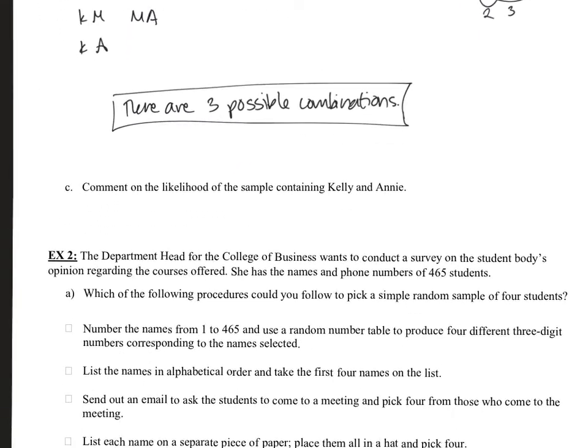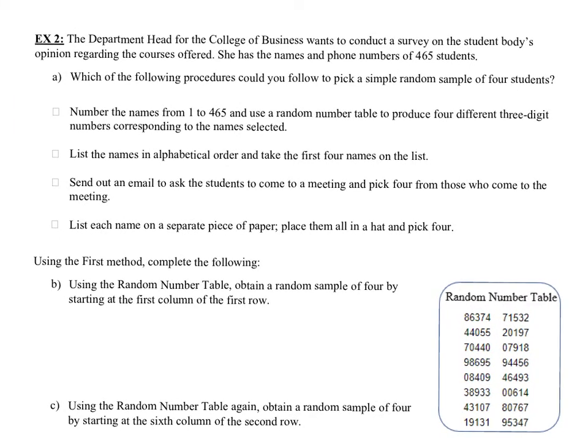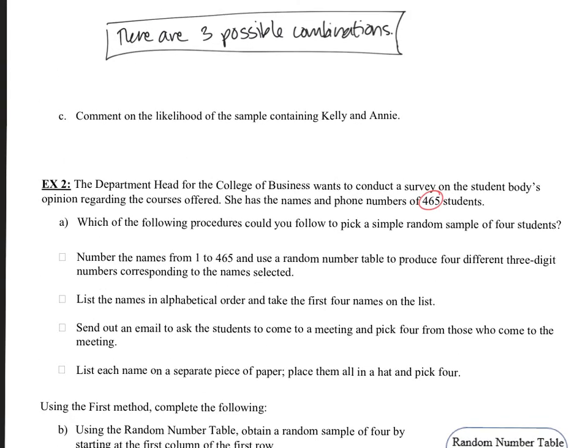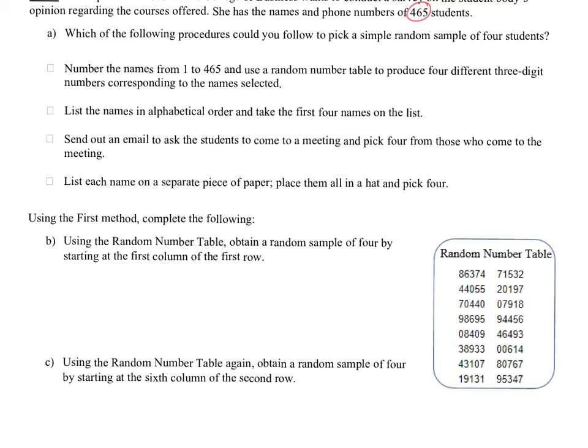So on to example two. The department head for the College of Business wants to conduct a survey on the student body's opinion regarding the courses offered. She has the names and phone numbers of 465 students. Which of the following procedures could you follow to pick a simple random sample of four students? So we want to make sure that the options we're looking at are random. And one of the main things we mentioned before is that each person in the, or each member in the sample needs to have the same exact, what would they call that, probability or likelihood of being picked. So that's one of the main things. They all need the same likelihood.